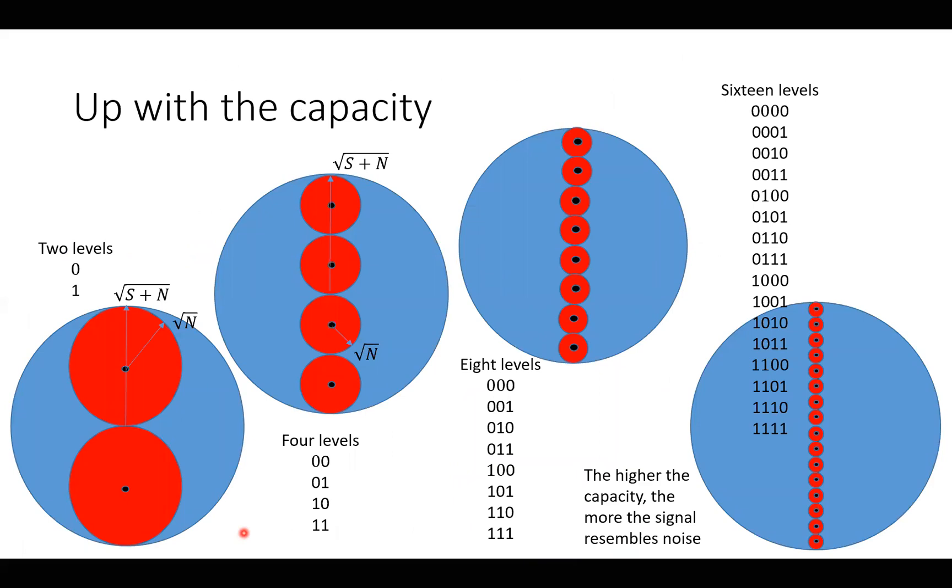So if we look at it like this, we can see here, if we have two levels, we can think of here is the ball, which is noise and signal ball. So the length here is sqrt(S+N). The length of the noise ball is sqrt(N). Here we have two levels. Here we have four levels. So then we have four possible 00, 01, 10, 11.